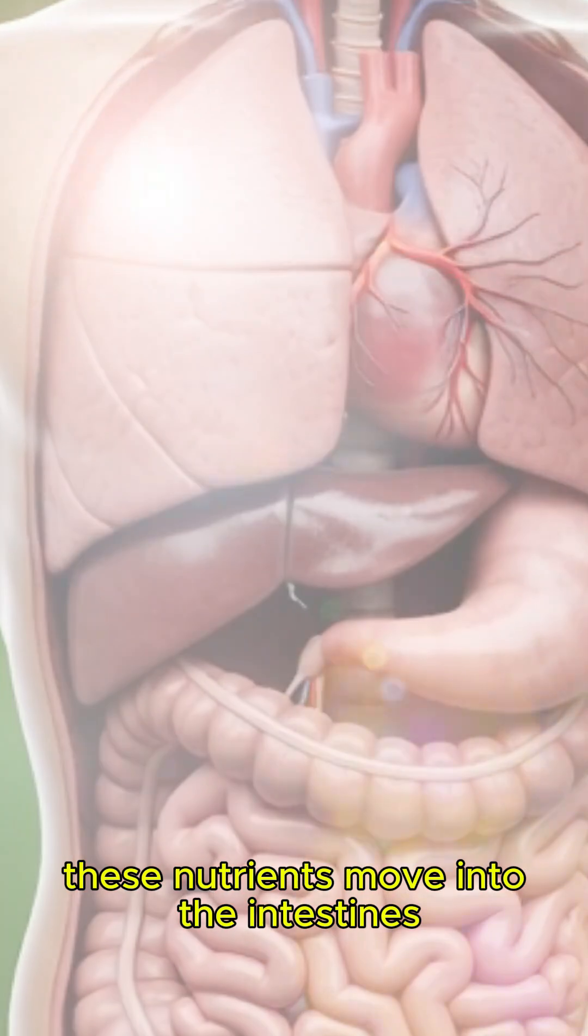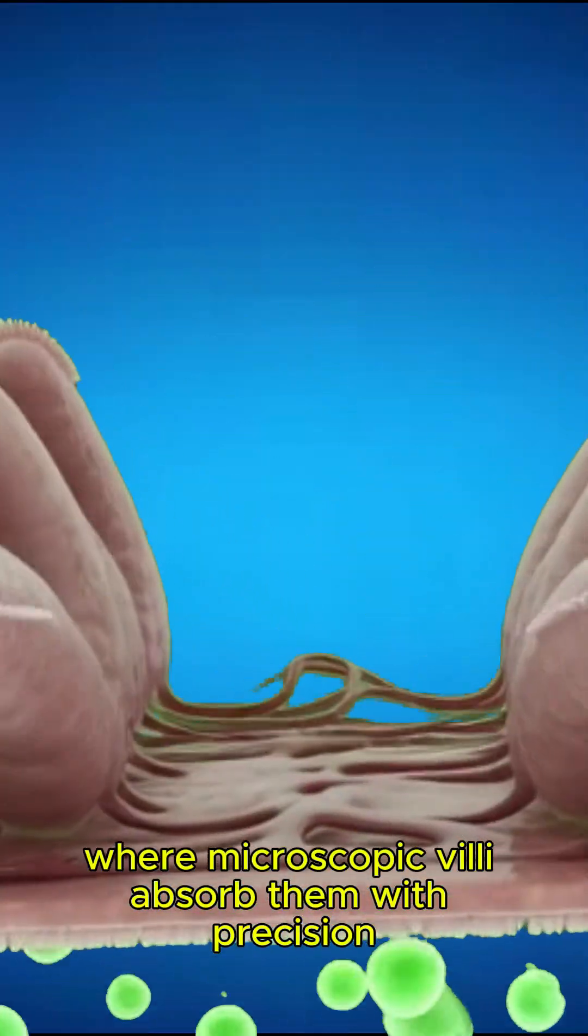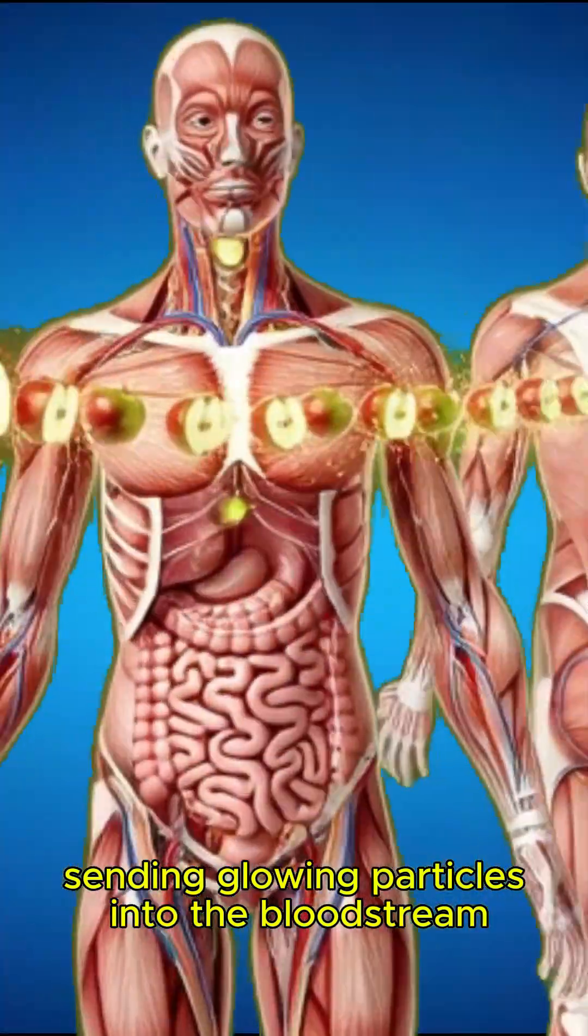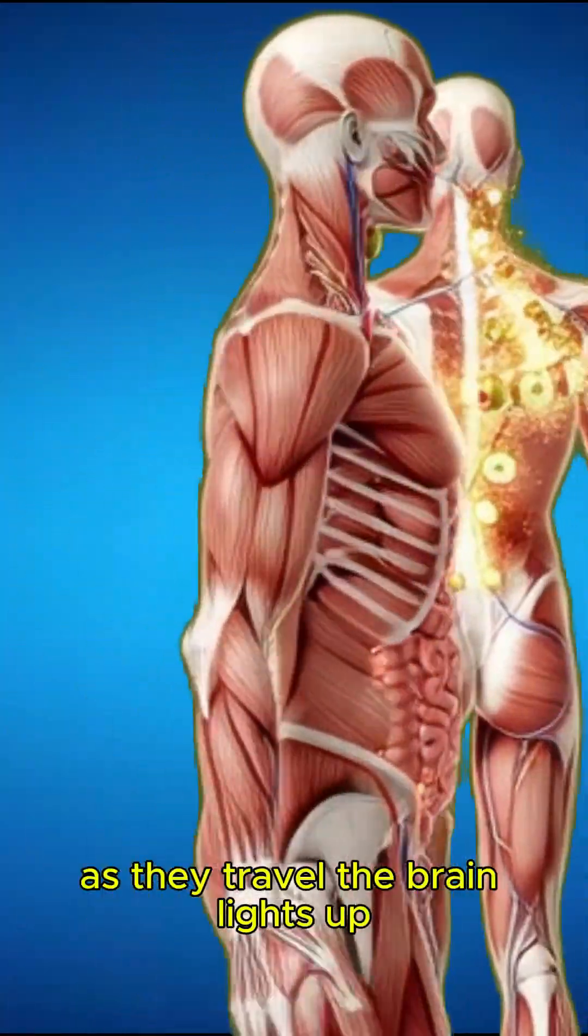These nutrients move into the intestines, where microscopic villi absorb them with precision, sending glowing particles into the bloodstream. As they travel,